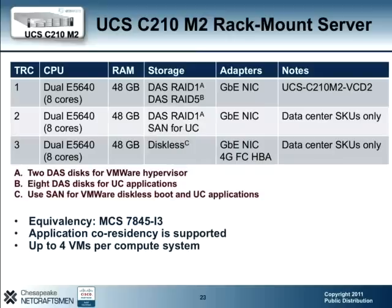The UCS C210M2 also has three TRCs, roughly equivalent to the MCS7845i3. Application co-residency for up to four UC VMs is supported on all three TRCs. TRC1 is a DAS-only option with the hypervisor and UC application running on the local disk system. TRC2 uses DAS for the hypervisor only, while the UC application can be loaded on the SAN. TRC3 is a diskless solution where both the hypervisor and UC application are loaded from the SAN.